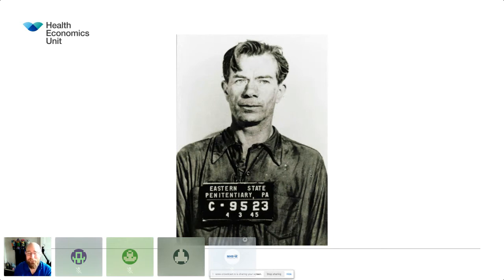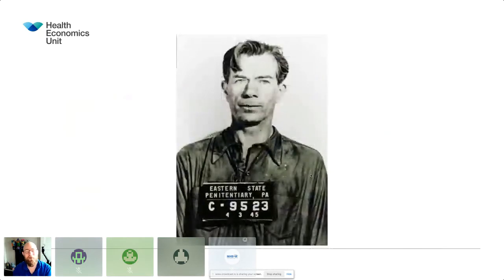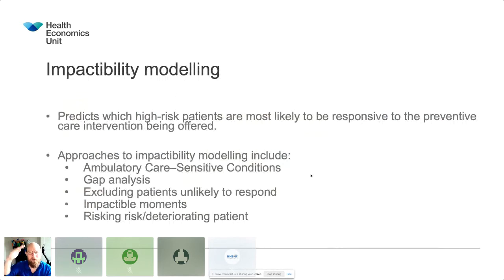If it was that easy, we would have cracked this years ago. So there's this problem with impactability — a horrible American word — or amenability to change. What we need to understand is which of those patients, where we find them in our segment and we see that they're deteriorating or they have a rising risk, is most likely to respond to the preventative care being offered. Because if they were responding, we would hopefully manage that care. So there are approaches to looking at impactability modelling.